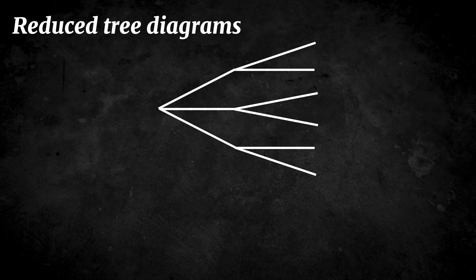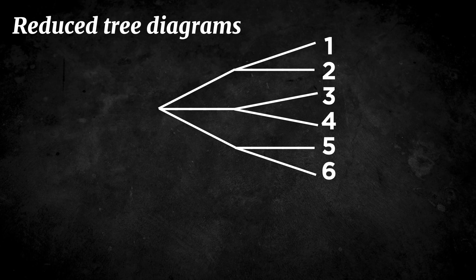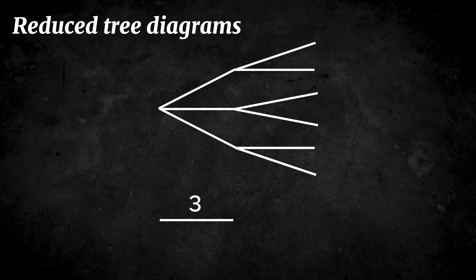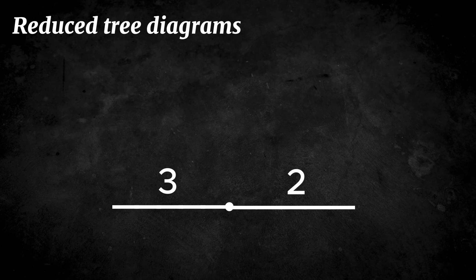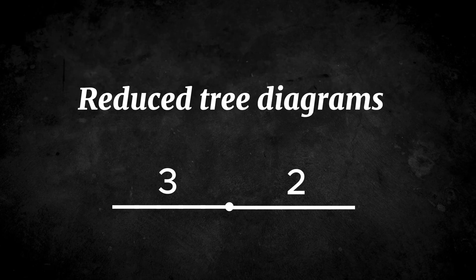For example, in the shirts and pants case, instead of drawing all six paths, you can simply note that the first choice has three options and the second choice has two options, then multiply them. This simplified version is often called a reduced tree diagram and it helps us add up the totals more quickly without clutter.